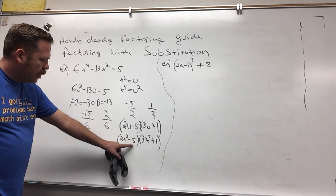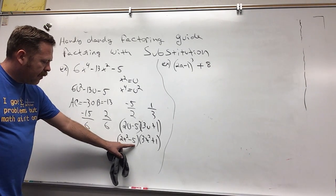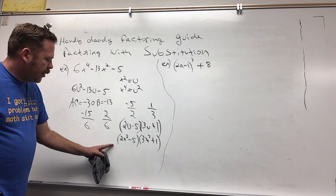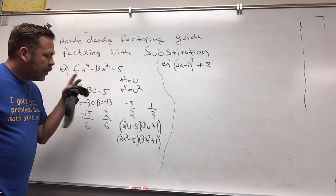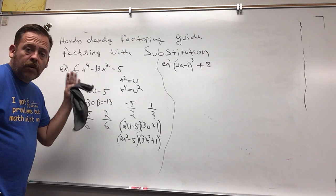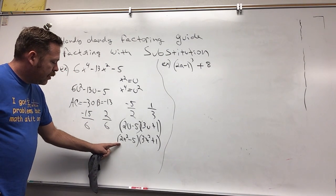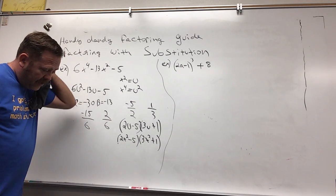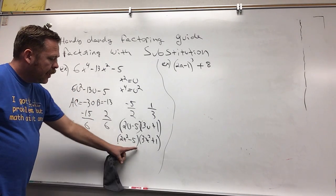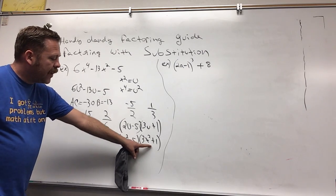Now we always want to make sure everything's completely factored. We look at this binomial, there's no GCF. For binomials we can only use GCF, difference of squares, sum of cubes, and difference of cubes. 2 is not a perfect square, 5 is not a perfect square, and they're definitely not perfect cubes. You'll find the same thing here, there's no way to factor this, so it's completely factored and we're done.